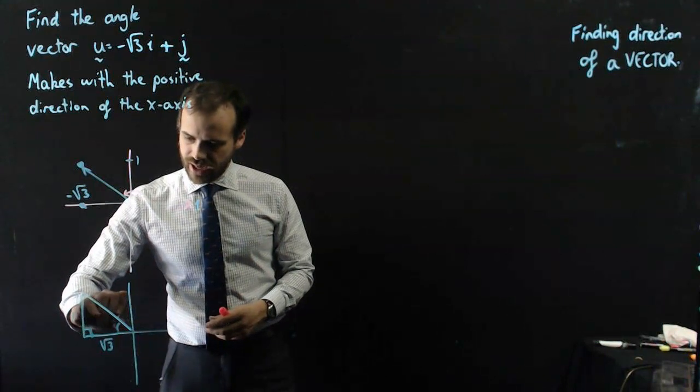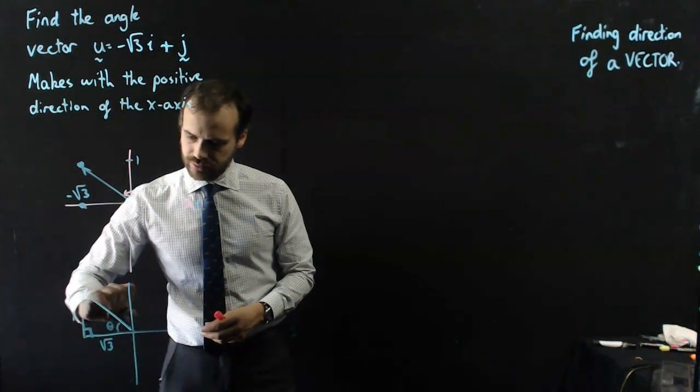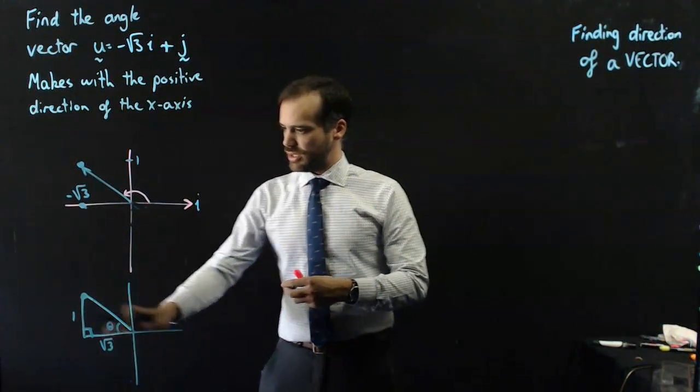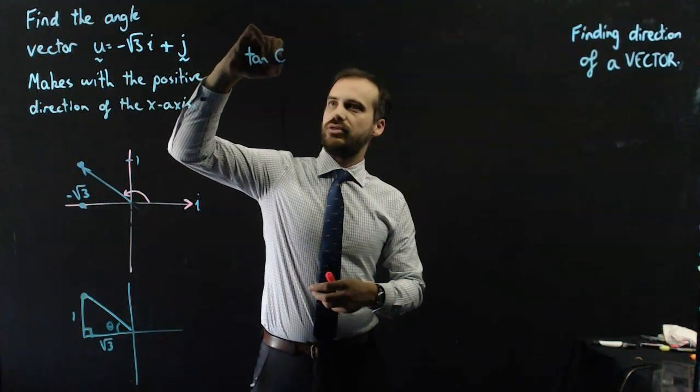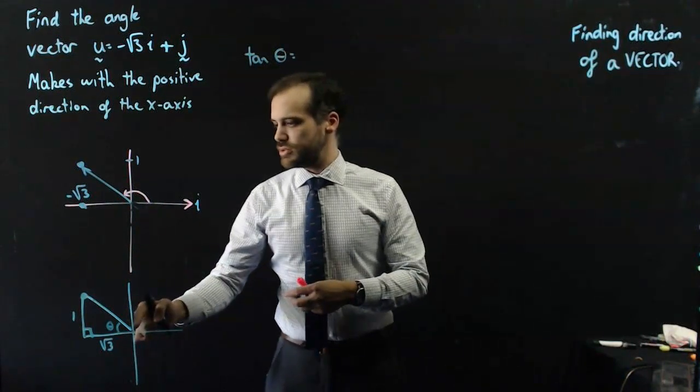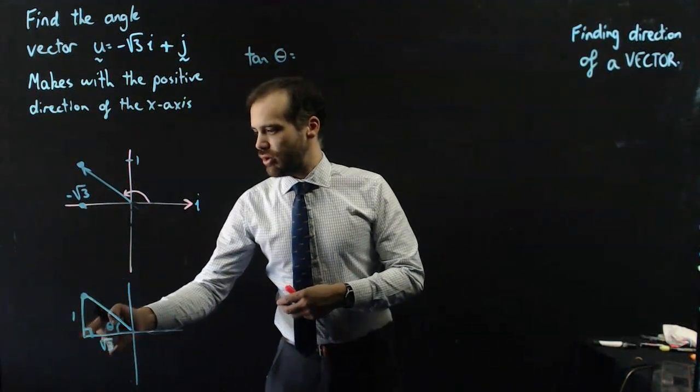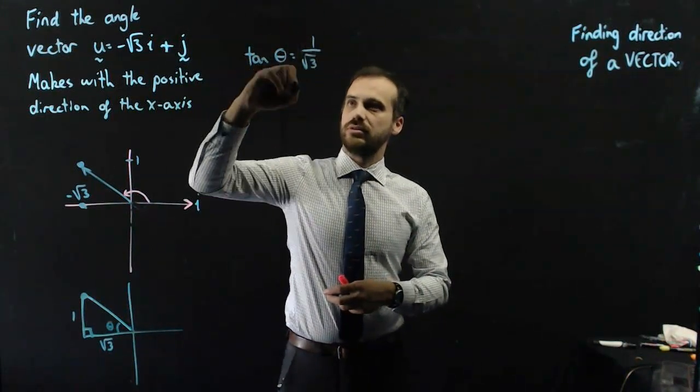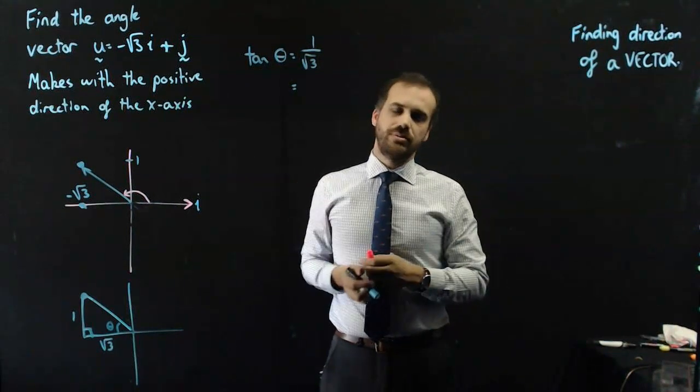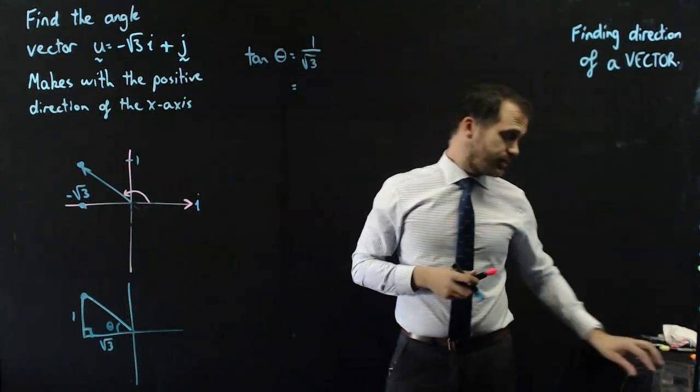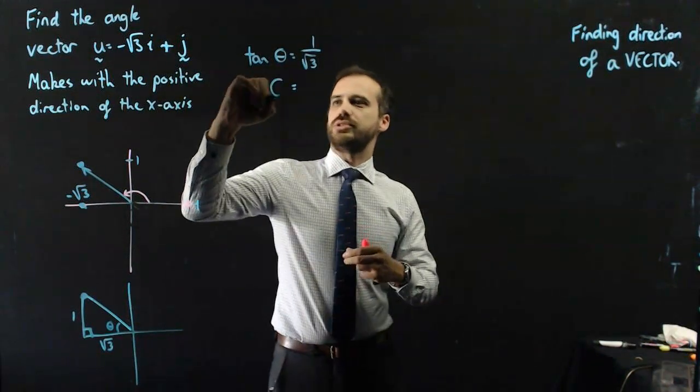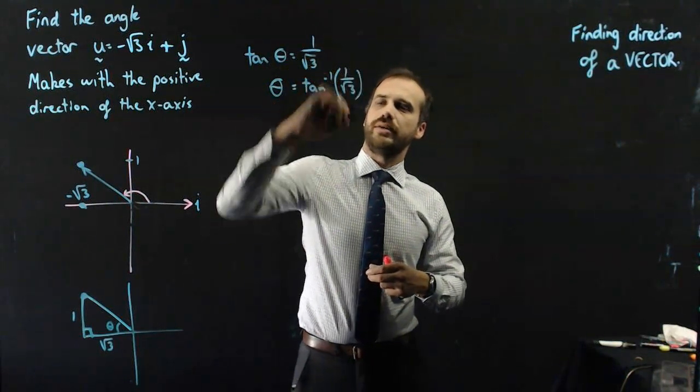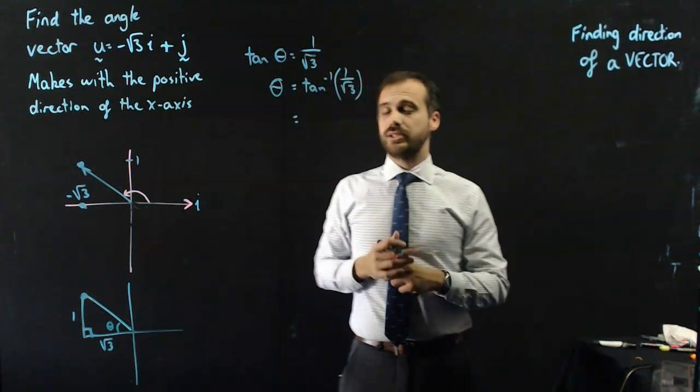Now, I can find this angle by using trigonometry. Alright, so I can say something like tan theta equals opposite over adjacent 1 over root 3. And I can type that into my calculator and I'll get an answer. I should probably just do one more step, right? Inverse tan. Okay, I can type that into my calculator and I'll get an answer.